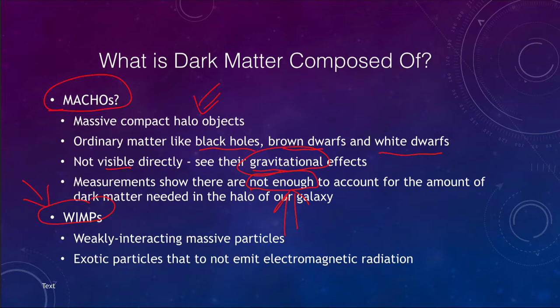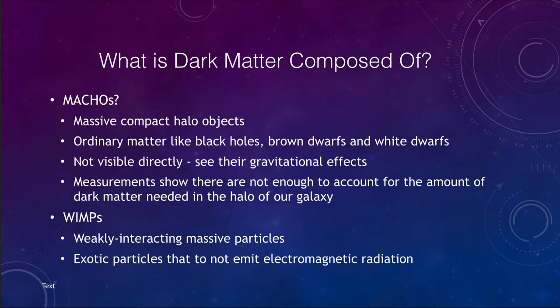WIMPs, on the other hand, are weakly interacting massive particles. These are exotic particles that do not emit electromagnetic radiation — unusual subatomic particles, not things like protons, neutrons, and electrons that make up ordinary matter, but other more exotic types. These are what we think may make up the dark matter, because it does not seem like any type of ordinary matter can possibly work.